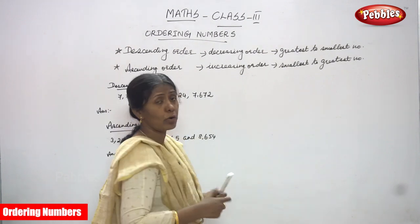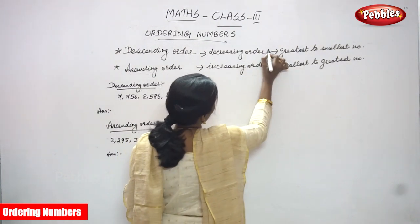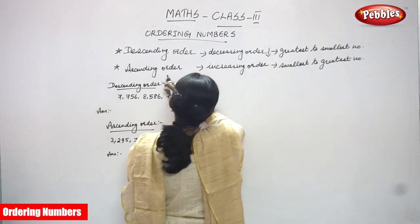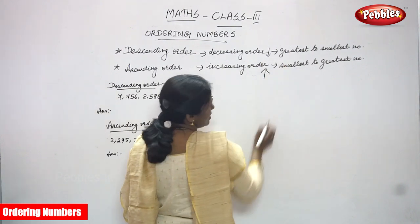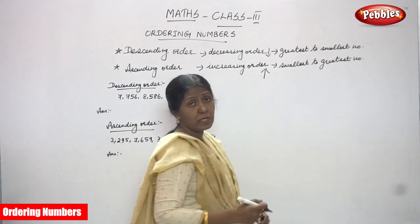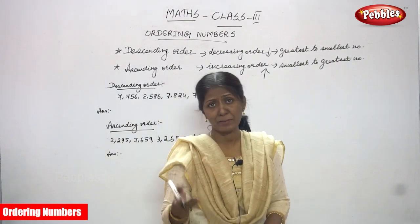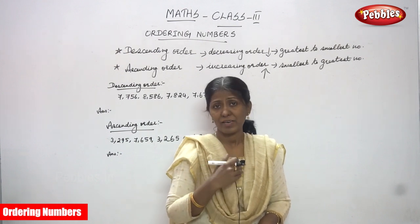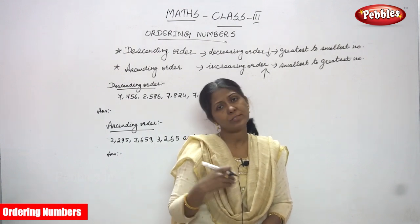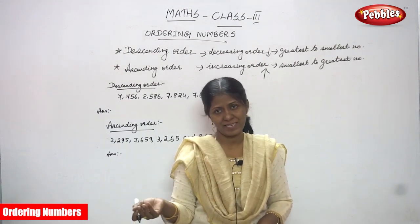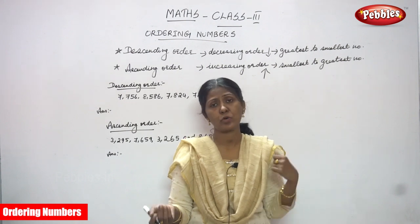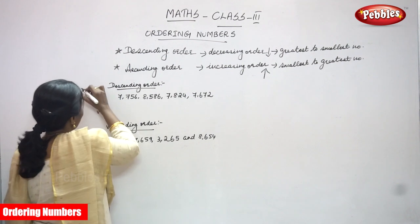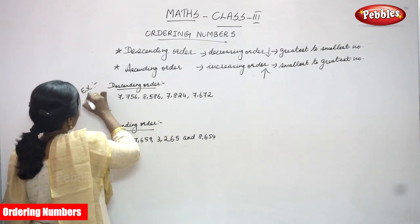Descending means decreasing order and ascending means increasing order. When we arrange numbers from greatest to smallest, that is called descending order. When we arrange numbers from smallest to greatest, that is called ascending order. Now we are going to see the examples.